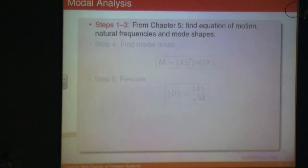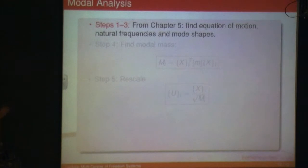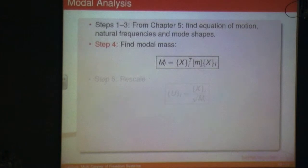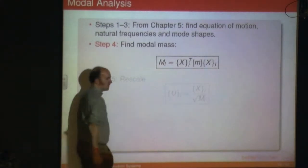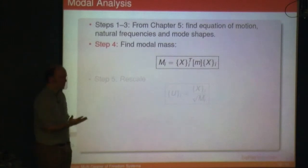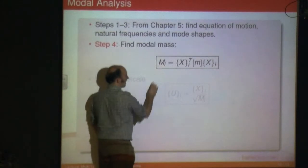Steps one to three are things you've done in chapter five and last year. Step one: find the equation of motion in matrix form. Step two: solve for the natural frequencies. Step three: find your mode shapes. Step four is where the focus on new material starts — you find the modal mass. If you've got two modes of the system, you're going to have two modal masses; three natural frequencies, you'll have three modal masses.